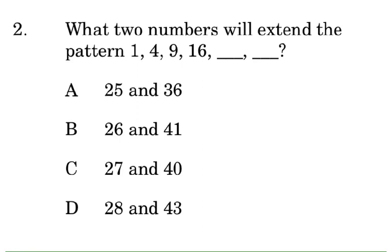Alright, let's look at this one. What two numbers will extend the pattern 1, 4, 9, 16? Alright, clearly, if we subtract the second from first, we'll have three, five, seven. And we realize that these are odd numbers. So we could say nine plus sixteen would give us twenty-five, and eleven plus twenty-five will give us thirty-six.